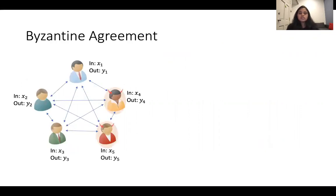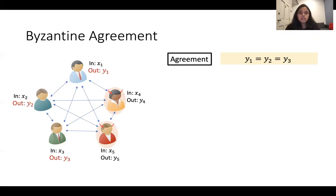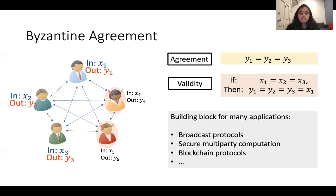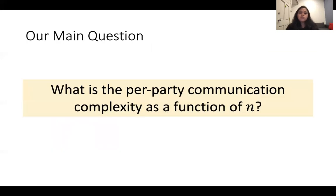To begin with, Byzantine agreement is an interactive protocol that allows a group of parties to agree on one of their inputs even in the face of some malicious corruptions. This is achieved by enforcing two properties, namely agreement and validity. Byzantine agreement is a fundamental building block used in many applications both in cryptography and in distributed computing. The main question we consider in this work is what is the communication complexity of Byzantine agreement as a function of the number of parties.